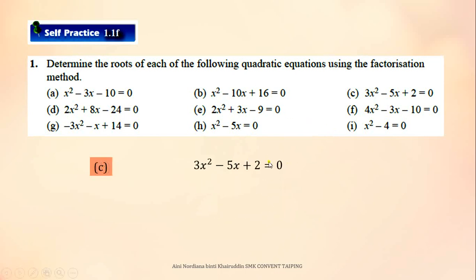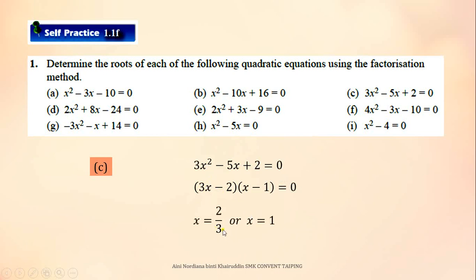For C, the calculator will give you the answer X1 equals 2 over 3. The 3 here — you put it in the first factor: 3X minus 2. Since the root is positive, you place a negative sign here in the factorized form.